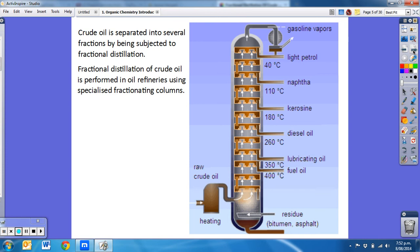When we're talking about crude oil, it's got lots of different components, so we use a process called fractional distillation. Fractional distillation of crude oil happens in oil refineries and they have these massive big towers which are called fractionating columns.